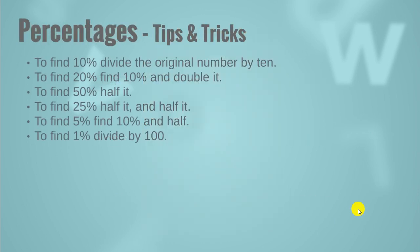Here we have a few tips and tricks. The first tip is to find 10% divide the original number by 10. Which means that if you want to find 10% of 100, what you need to do is simply divide the value by 10. You do not need to put the values in the whole percentage formula. Simply divide 100 by 10 and you will get 10% of 100 and you get 10.